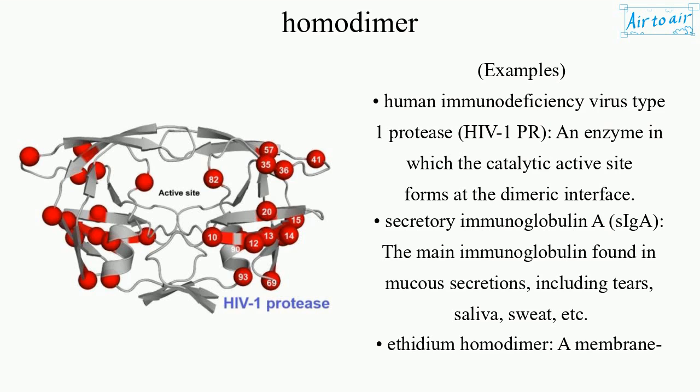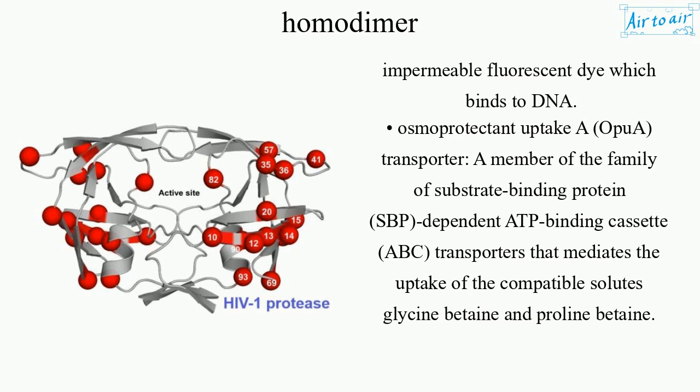Ethidium Homodimer: a membrane-impermeable fluorescent dye which binds to DNA.